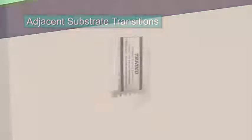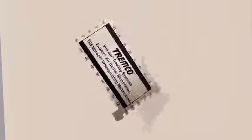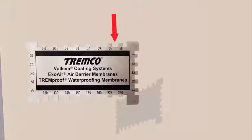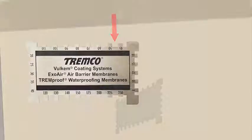ExoAir 230 is applied at 48 mils to achieve 25 dry mils on exterior sheathing, and concrete substrates require 48 wet mils to achieve 25 dry mils on exterior sheathing.